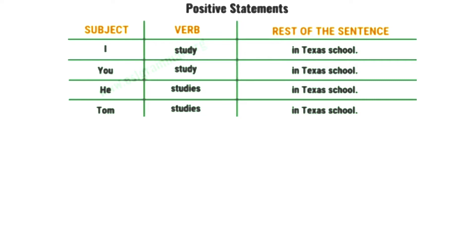'Tom studies in Texas school.' Here, 'Tom' is the subject, 'studies' is the verb, and 'in Texas school' is the rest of the sentence.